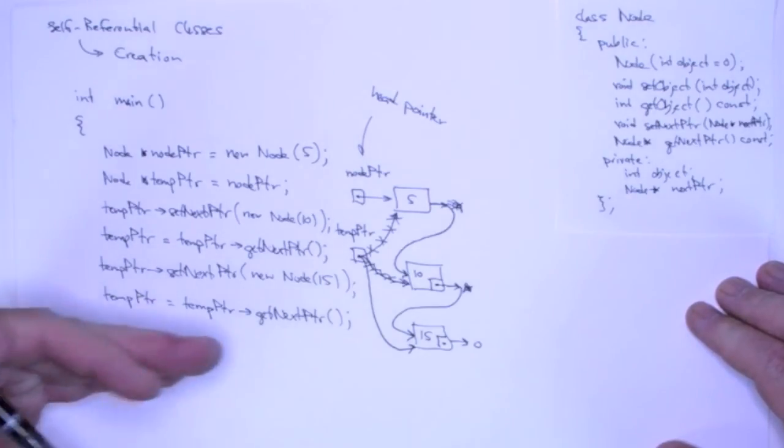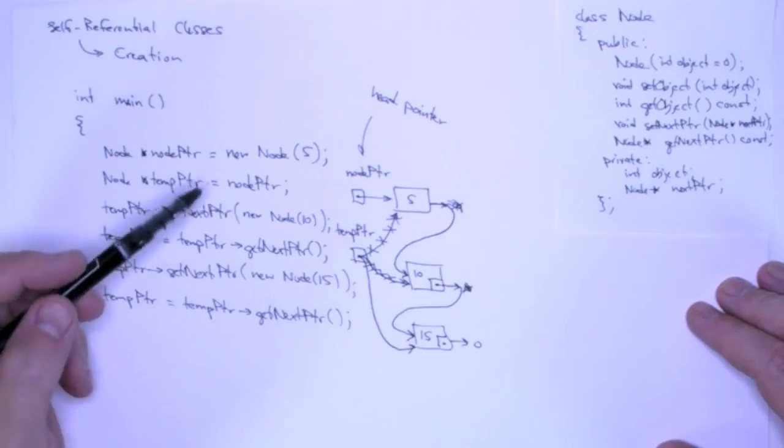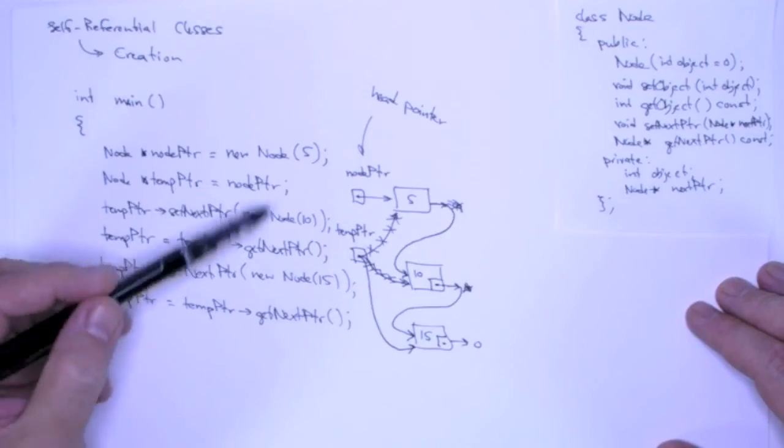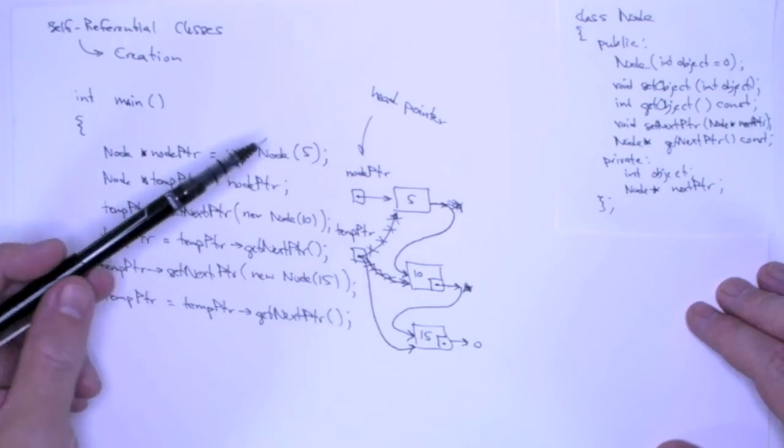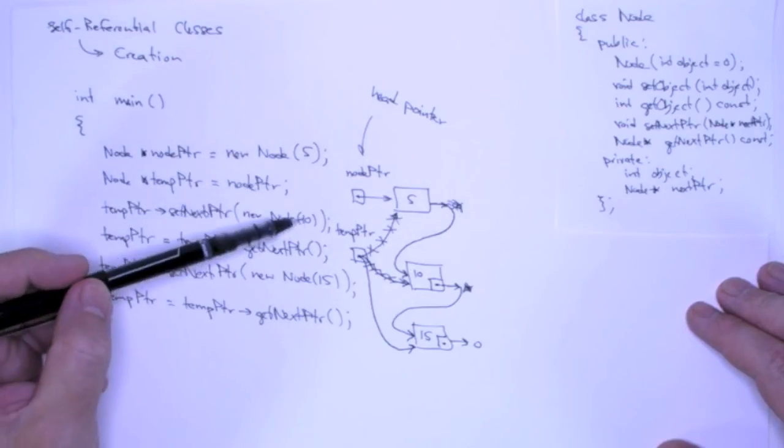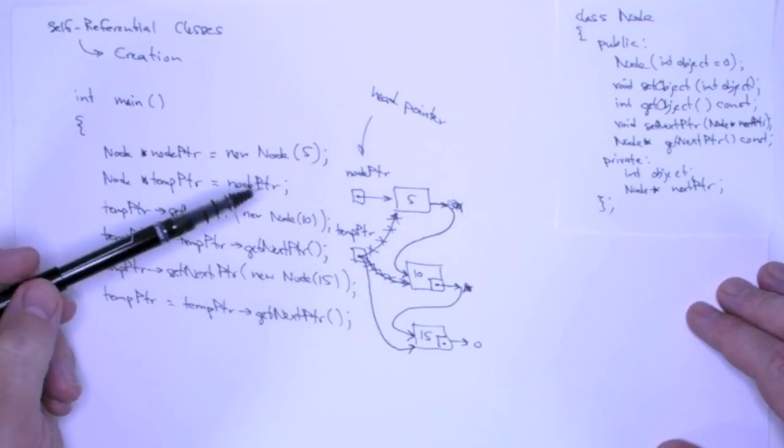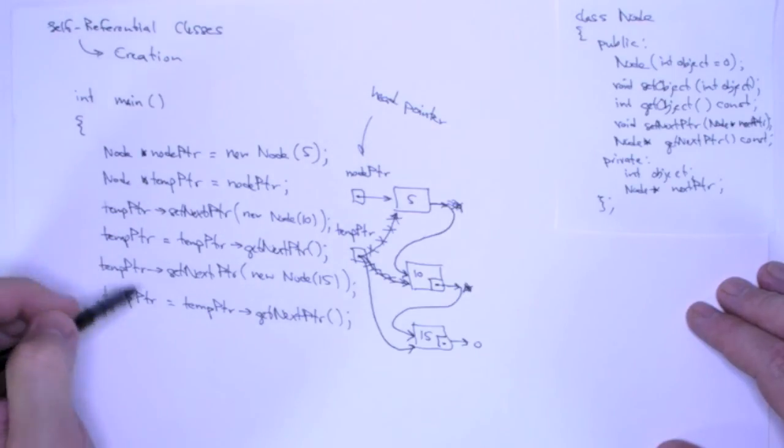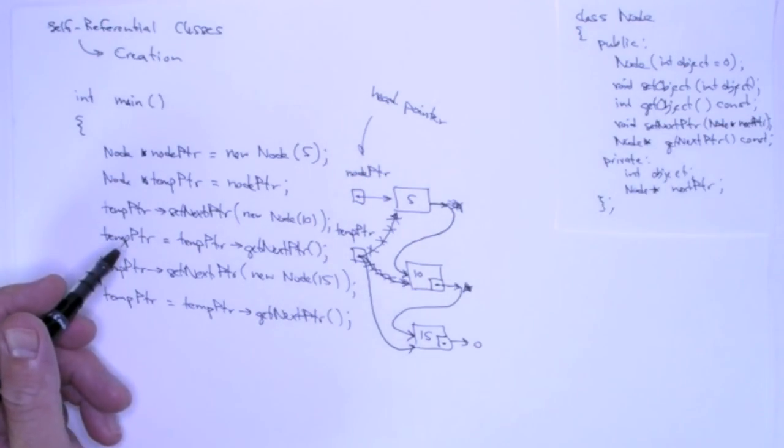Okay? And if we wanted to add additional nodes, we could keep going. Now, usually, you're not going to hard code things like this. I mean, maybe if it's something really small, but normally this will be coming out of a file, or this will be coming across a network connection, or something like that. And you can already see a pattern here where we could put this into a loop, and we would be able to create linked lists of arbitrary length.